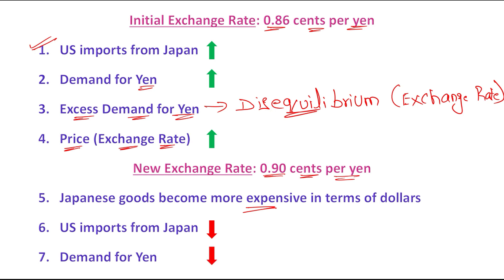And finally, because the demand for yen is being reduced, ultimately the equilibrium exchange rate will be achieved again. As you can see in this example, the central banks have not intervened in the foreign exchange market — they allow the exchange rate to adjust to equate the supply and demand for foreign currency.